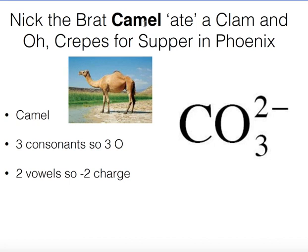Now focusing on 'Camel': C-A-M-L has three consonants, so three oxygens — CO3. Camel has two vowels, so it has a two minus charge. That gives us carbonate. Carbonate is commonly found in drinking water, calcium carbonate is chalk, and carbonate is a component of our bloodstream where it helps maintain blood pH.